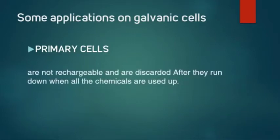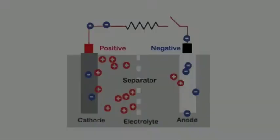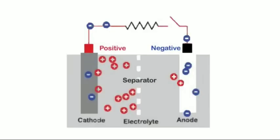Primary cells are not rechargeable and are discarded after they run down when all the chemicals are used up. In other words, no more chemical potential energy available or the chemicals in the battery can react to produce electrical energy.